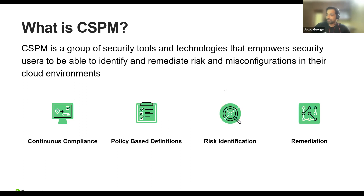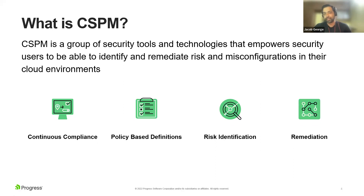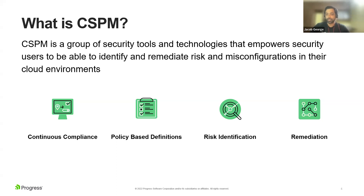CSPM is normally a category of security tools and technologies that enable users to actually identify and remediate risks and misconfigurations in the cloud environment. If you try to look at it overall, there are four major aspects to CSPM: continuous compliance, policy-based definitions, risk identification, and remediation.